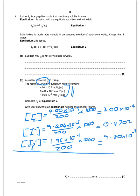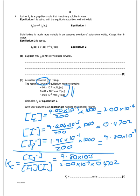Once you put this into your calculator you get those figures. You then calculate Kc. Kc is the concentration of the product I₃⁻ divided by the concentrations of the reactants, I₂ multiplied by I⁻. Putting in the numbers we just worked out, Kc equals 104.